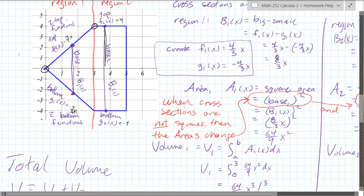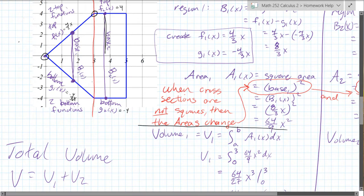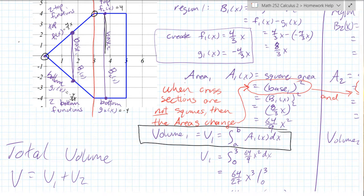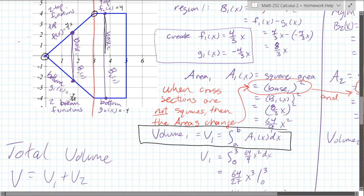Now, we're gonna put that into the volume integral right here, and all we need is a and b. Good news is, these have really nice x values that you don't need to do any algebra to get. You can read them right off the graph. Our small x value is zero, big one is three.